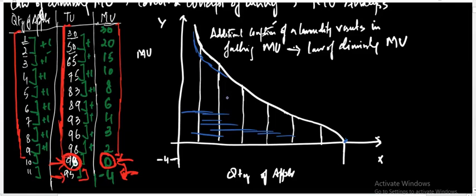Taking the example of apples, as I increase the consumption from 1 to 11 units, the utility tends to fall. If I increase consumption from 1 unit to 10 units, at the 10th unit the marginal utility becomes zero, and by consuming one additional unit — the 11th unit — the utility becomes negative.